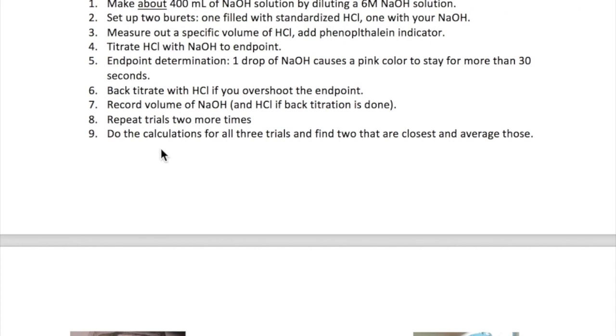Here are the steps to completing the standardization experiment, or part A. Write these steps in your lab notes so you have a general idea of what you need to do. The first part is to make your sodium hydroxide solution. This is done by adding about 400 milliliters of water to a small volume of 6 molar NaOH. Note the word about here - you're not supposed to measure this precisely.